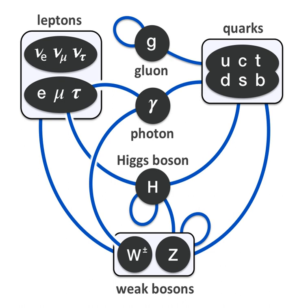The defining property of quarks is that they carry color charge and hence interact via the strong interaction. A phenomenon called color confinement results in quarks being very strongly bound to one another, forming color-neutral composite particles containing either a quark and an antiquark or three quarks. The familiar proton and neutron are the two baryons having the smallest mass. Quarks also carry electric charge and weak isospin, so they interact with other fermions both electromagnetically and via the weak interaction. The remaining six fermions do not carry color charge and are called leptons; the three neutrinos do not carry electric charge either, so their motion is influenced only by the weak nuclear force.